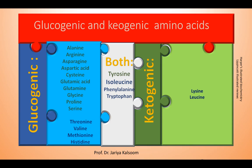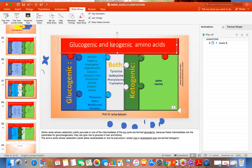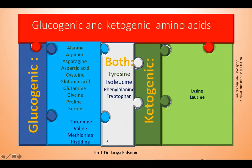Amino acids whose catabolism yields pyruvate or one of the intermediates of the TCA cycle are termed glucogenic, because these intermediates are substrates for gluconeogenesis and can give rise to glucose in the liver and kidney.